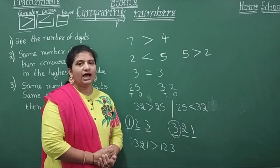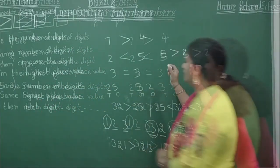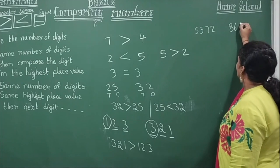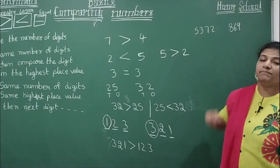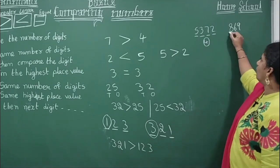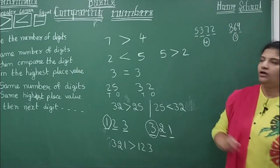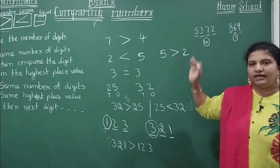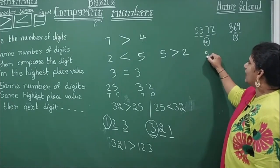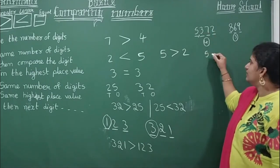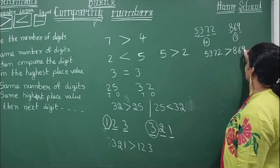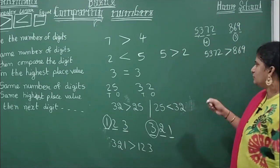Now suppose you have a different number of digits — how do you compare? Look here carefully: five-three-seven-two and eight-six-nine. Count the digits: one, two, three, four — it is a four-digit number; and one, two, three — it is a three-digit number. The number having more digits is the greater number. So 5372 is greater than 869.